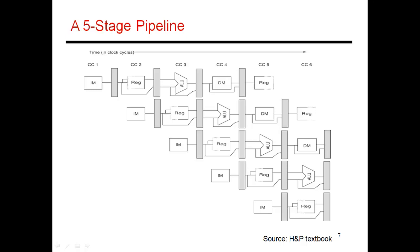This is the basic five-stage pipeline, and this will be a running example throughout much of this class. It's broken up into five stages: instruction fetch, decode and register read, execute, data memory, and finally a register write stage. Each of these stages is separated by a latch register, as we have discussed before.